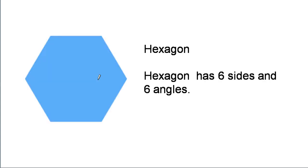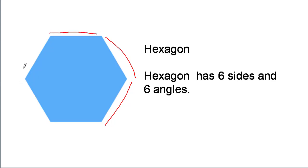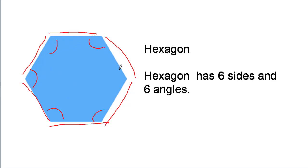Hexagon. Hexagon has six sides and six angles. One, two, three, four, five, six sides. One, two, three, four, five, six angles.